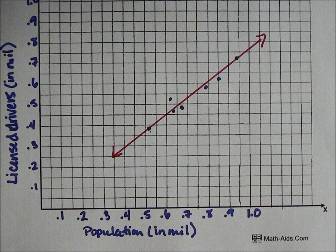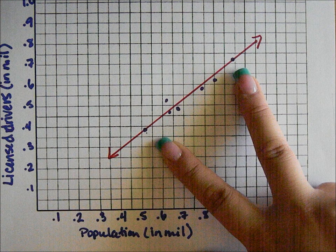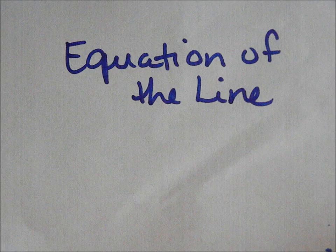Now we need to find the equation of our line. To do that, we need two points. Try to find two points that lie the closest to the line — it will give us a more accurate representation for our line.